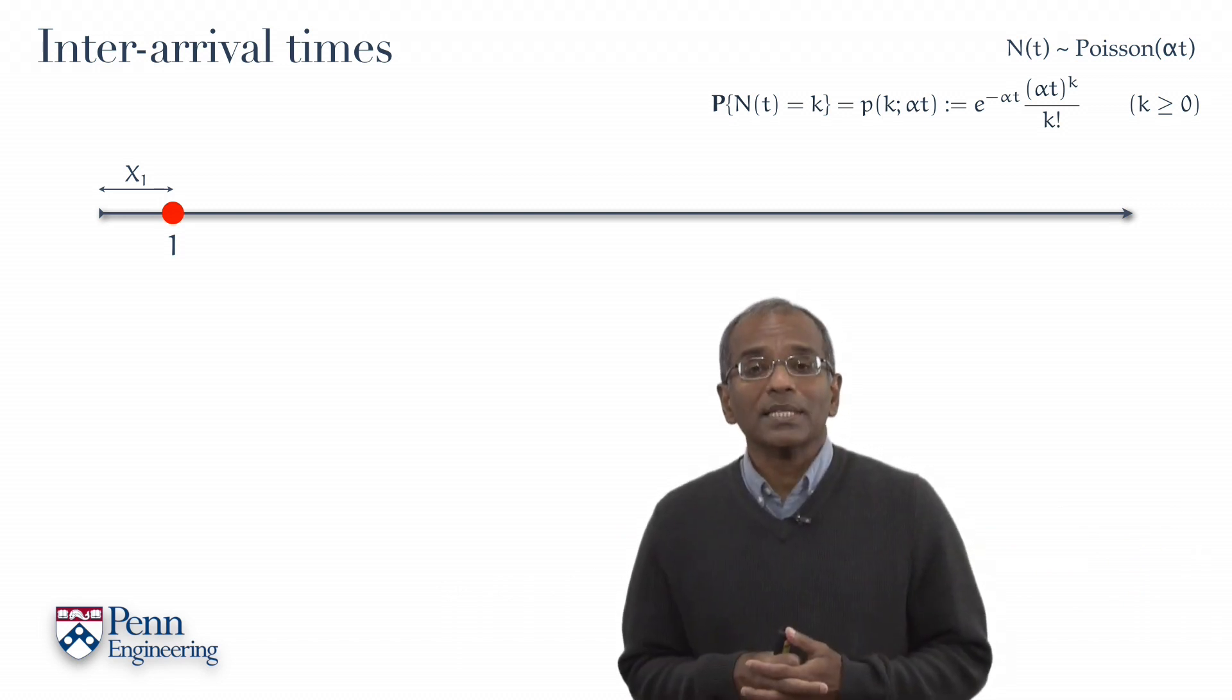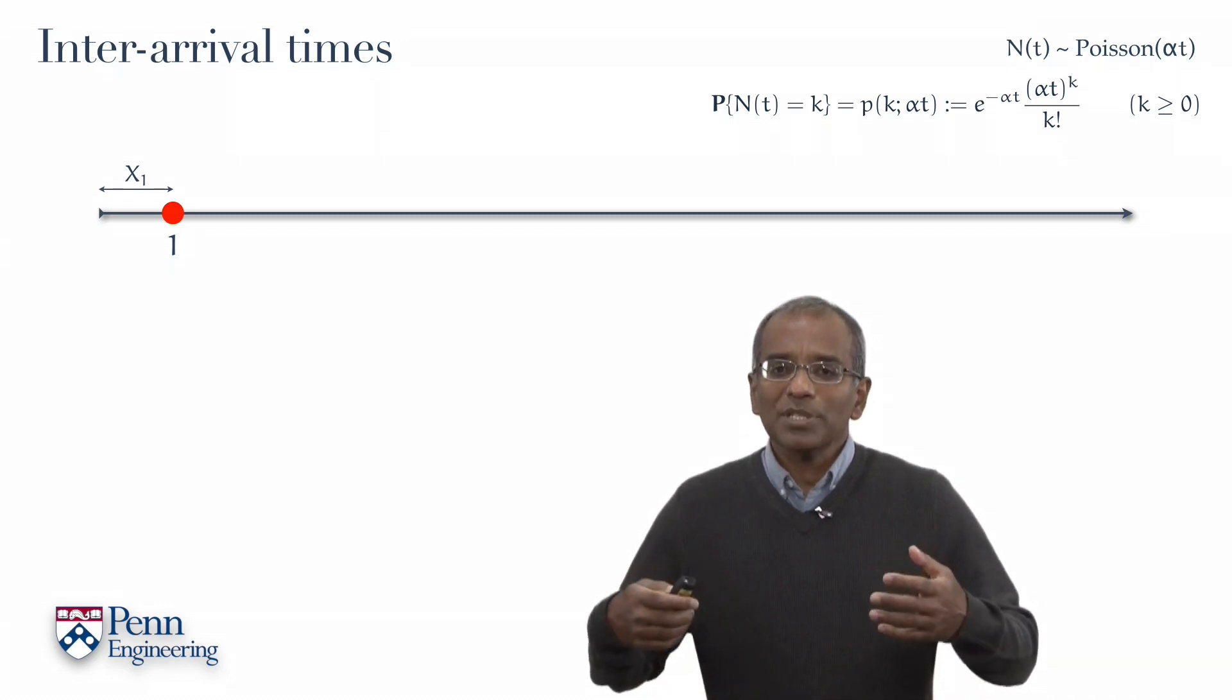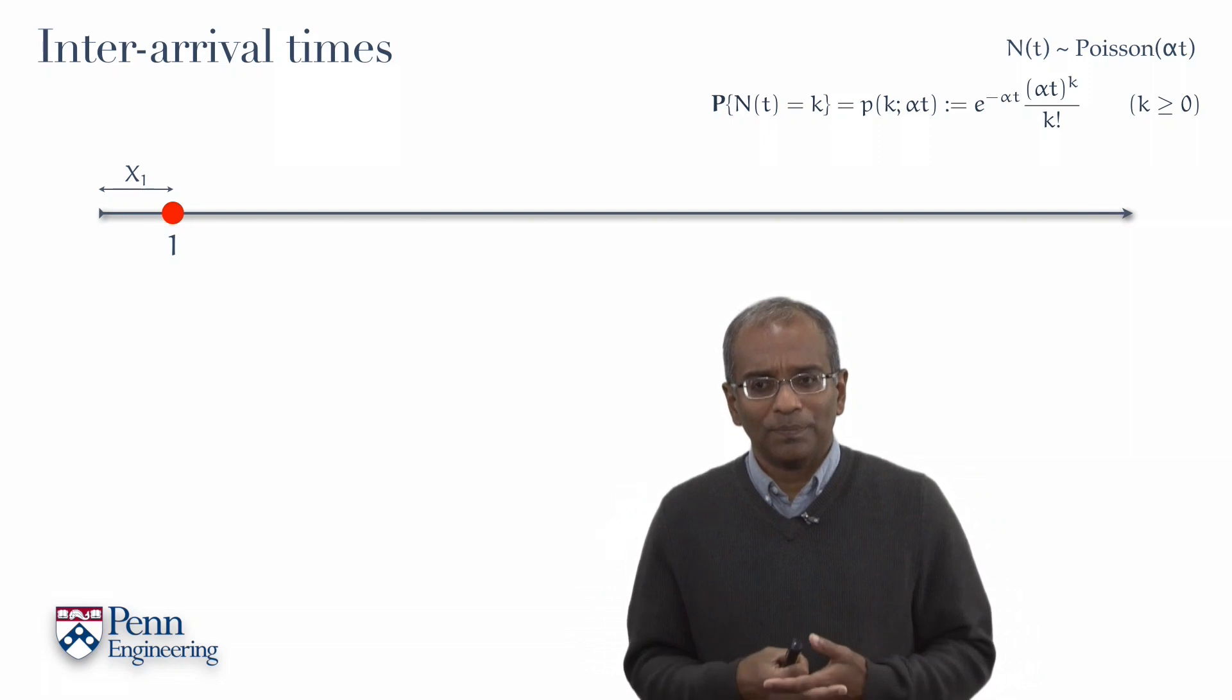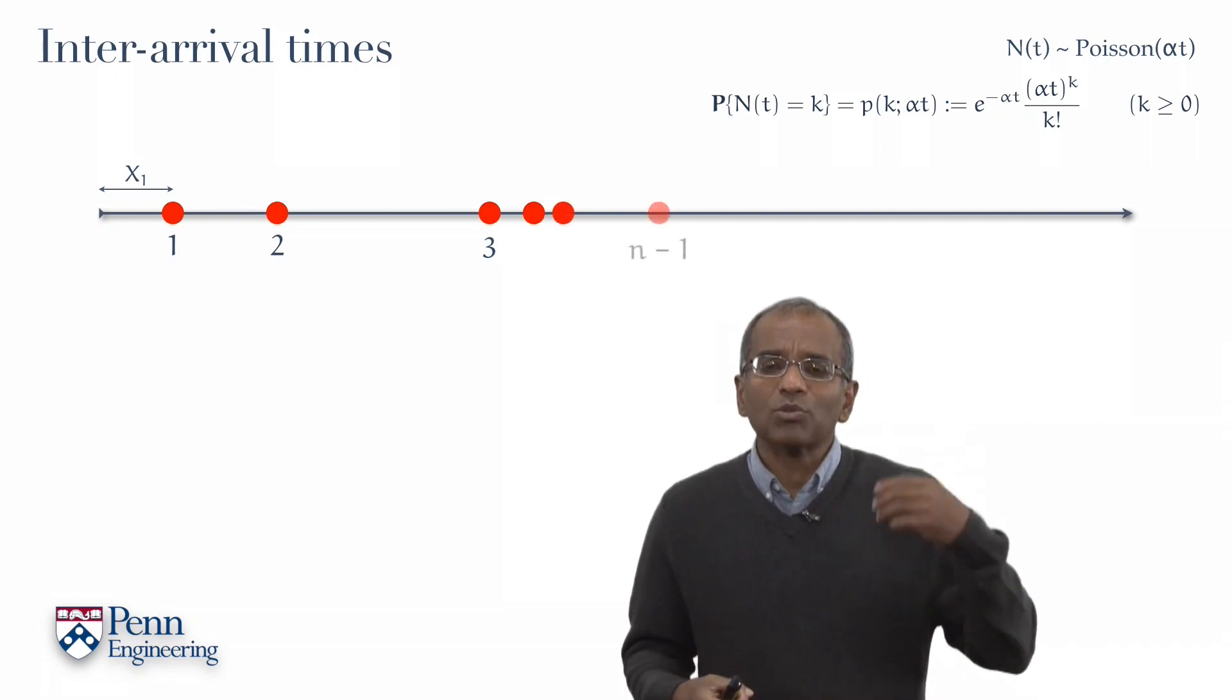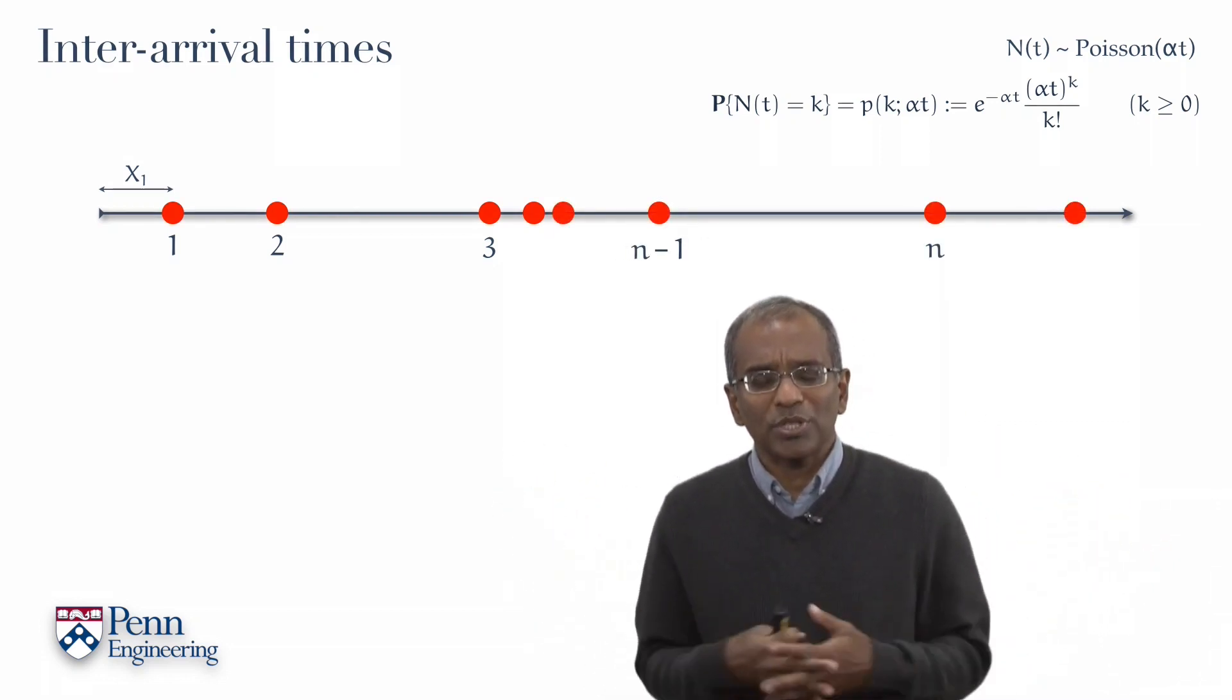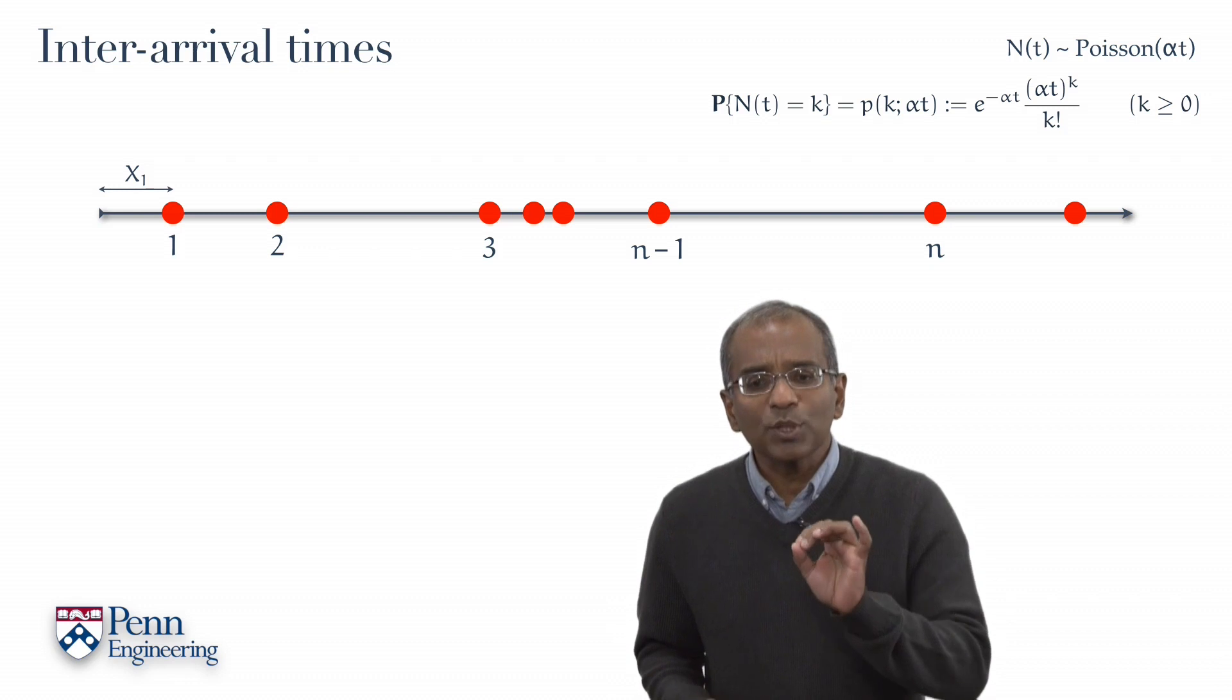Now that we've come to a right understanding of how to characterize the time of the first arrival, it is now time to turn to the arrival process as a whole. So we now have subsequent arrivals arriving at random points in time to characterize this Poisson process. Our analysis of the first arrival and the time to first arrival points the way.